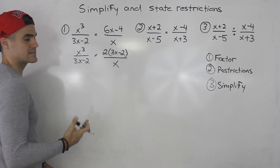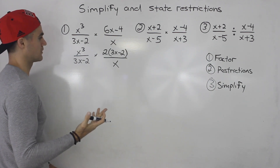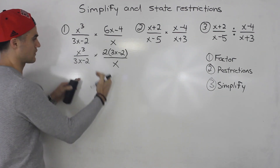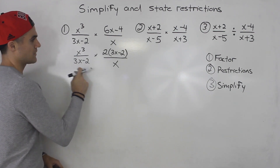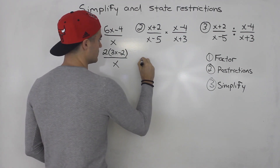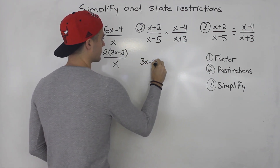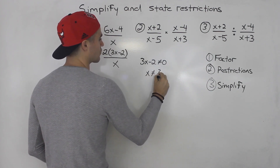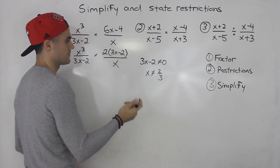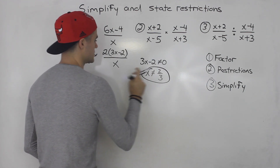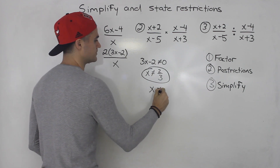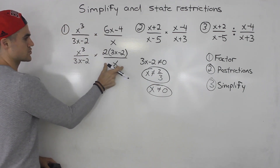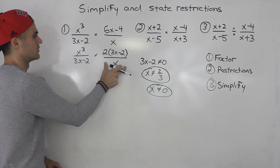Step two: get the restrictions — basically, when does the denominator equal zero? The denominator can't equal zero because dividing by zero makes everything undefined. So 3x minus 2 cannot equal zero, which means x cannot equal 2 over 3. That's one restriction. Also, x cannot equal zero. So there are two restrictions: these two denominators cannot equal zero.